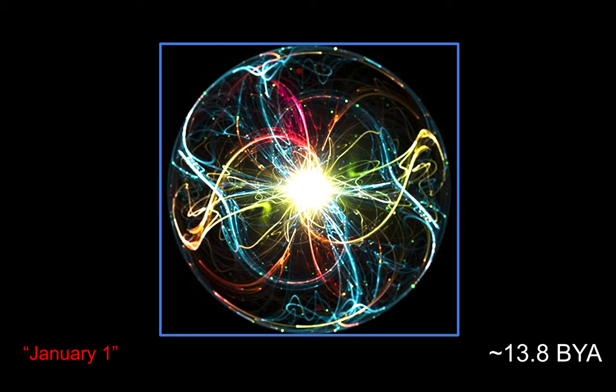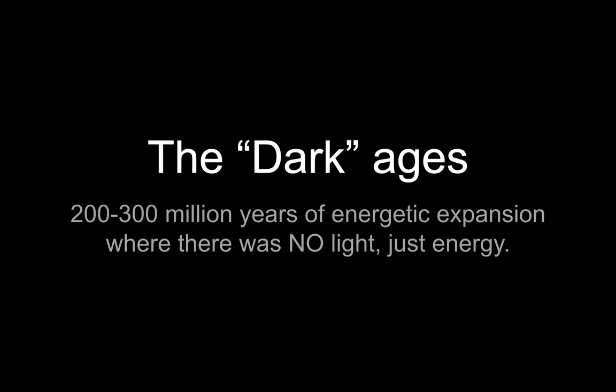So 13.8 billion years ago, obviously we weren't here. The Dark Ages happened after that — two to three hundred million years of energetic expansion. It was so energetic, there was so much energy in the universe, there was no light. Just pure energy expanding out at the speed of light, maybe even faster. We're not really sure what happened.